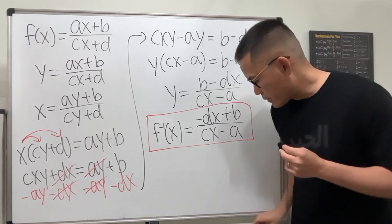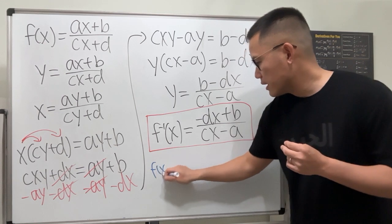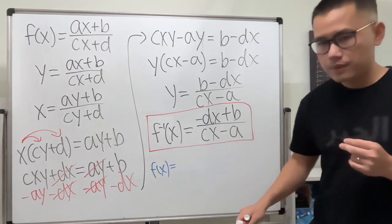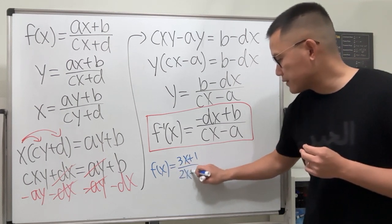That's why earlier, when we did the question, it was f of x equal to 3x plus 1 over 2x plus 4.